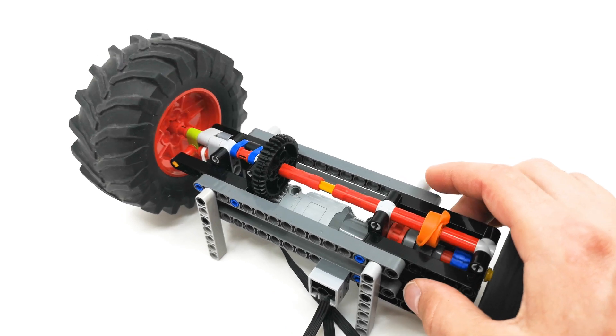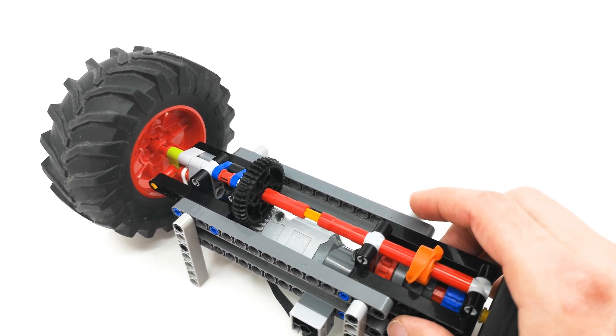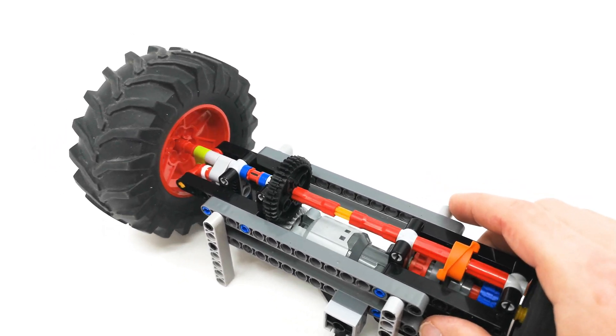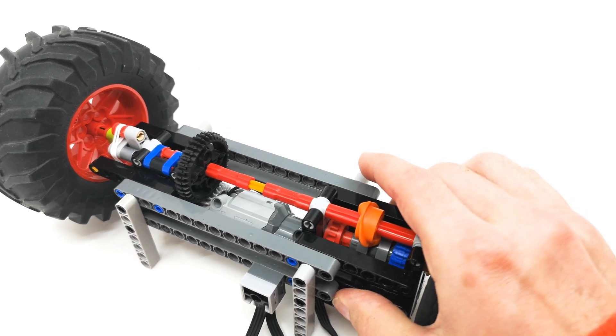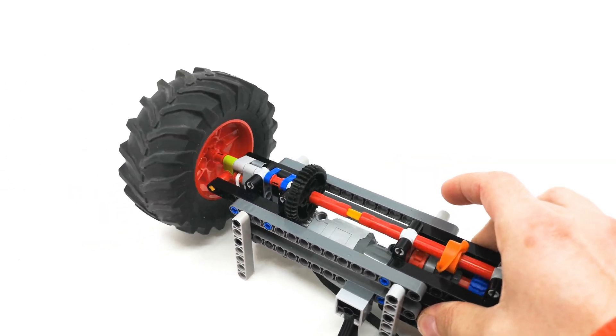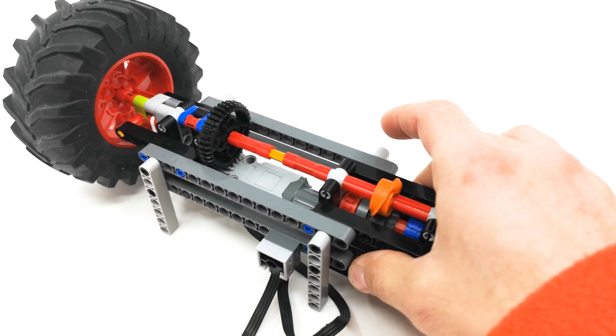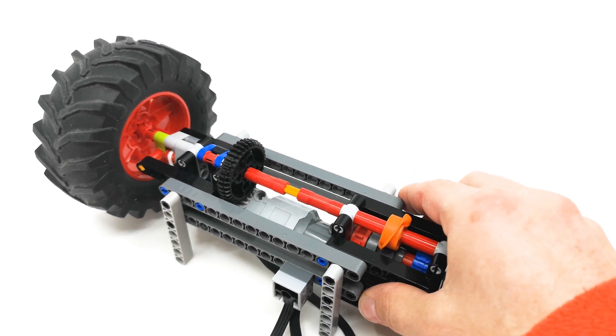Now, once we put resistance, you can see that the motor starts to turn. Once the resistance is high enough, the gearbox switches to the low gear. And once we let go, the gearbox switches back to the high gear.